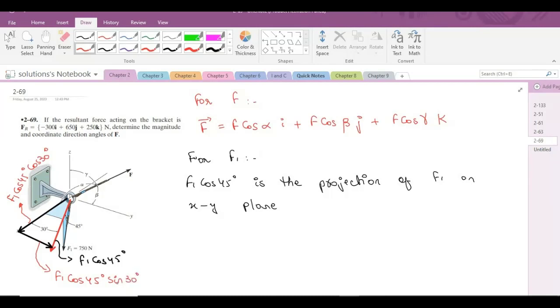Now we have one more component, that is along the negative z direction of F1 force. The component looks something like this. So this is the component of F1 force in the negative z direction.